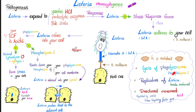Remember three things: lysis of your phagolysosome, replication of the bacteria, and directional movement thanks to Act A, which assembles your actin, causing actin rockets.